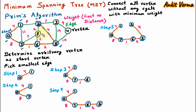From vertices 2, 7 and 6 we can reach vertex 8 with weights 2, 7 and 6. We can also reach vertex 3 from vertices 2 and 5 with weights 7 and 14, and vertex 4 from vertex 5 with weight 10. Out of these the minimum weighted edge is 2, so we put the edge from vertex 2 to 8.